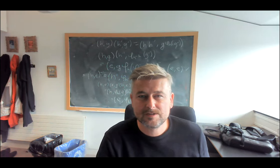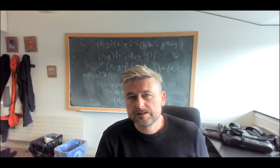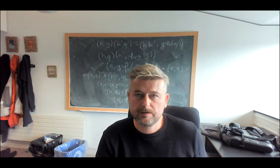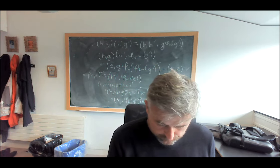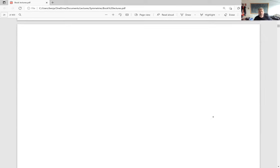Hello, this is Lecture 6 of Symmetries, Particles and Fields. This lecture is going to be about representations of groups and of Lie algebras, which are basically some matrices which satisfy some relations implied by the group or the algebra. I realized last time I advertised that we were going to do symmetries in quantum mechanics first, but I think it's better if we keep that in our back pocket until probably the next lecture, and we switch to this new topic of representations first.